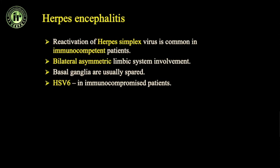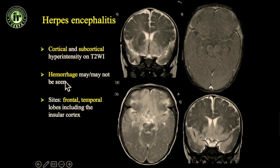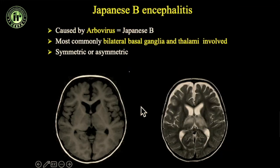Herpes is by far the most commonly seen in routine practice. It happens because of reactivation of herpes simplex virus, which is common in immunocompetent patients. Typically you get bilateral asymmetric limbic involvement with hyperintensities in the mesial temporal region, subfrontal cortex, and subcortical white matter, and it can spread along the corpus callosum. Most show restricted diffusion in the initial stage; hemorrhage is present in about 20% of cases. Outcome in these patients is bad. Typical location is frontal, mesial temporal, and insular cortex.